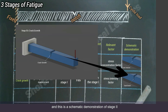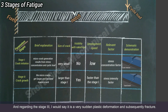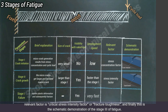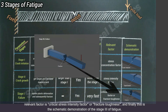Here is a schematic demonstration of stage two. Regarding stage three, it is a very sudden plastic deformation and subsequently fracture. The size of crack is kind of meaningless here as we have reached the fracture point. Visibility with the naked eye is yes, development speed is very fast, and the relevant factor is the critical stress intensity factor, or fracture toughness. And here is the schematic demonstration of stage three of fatigue.